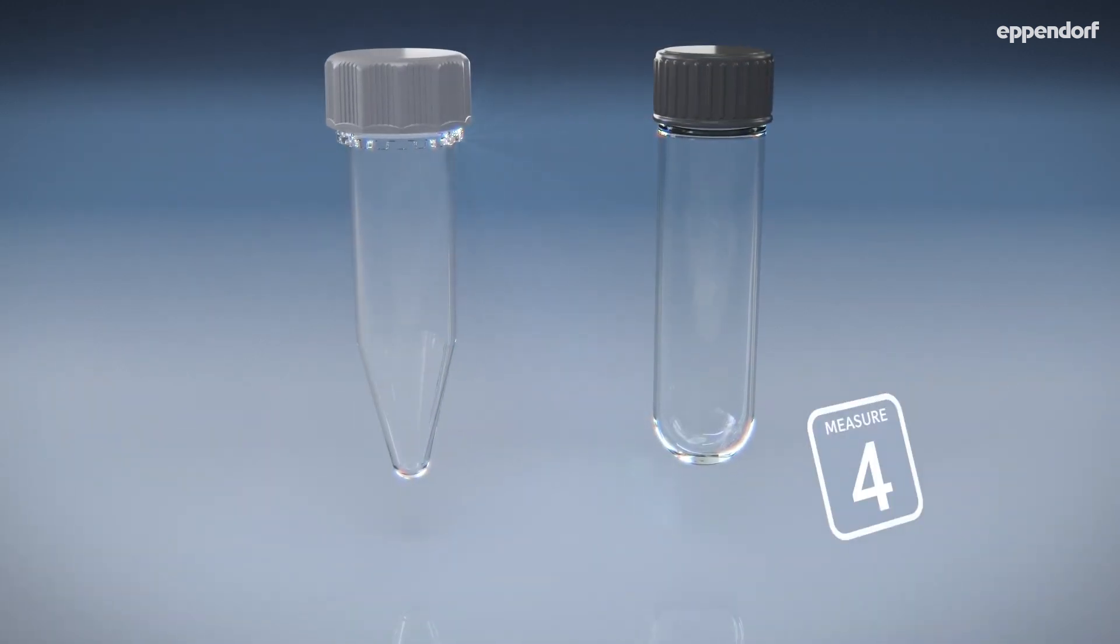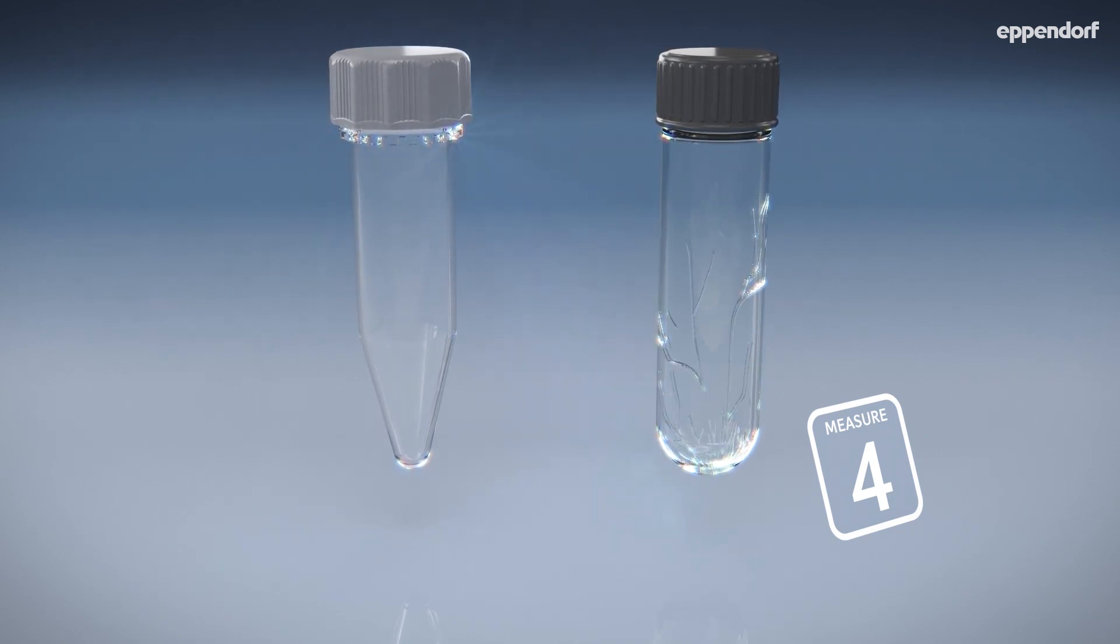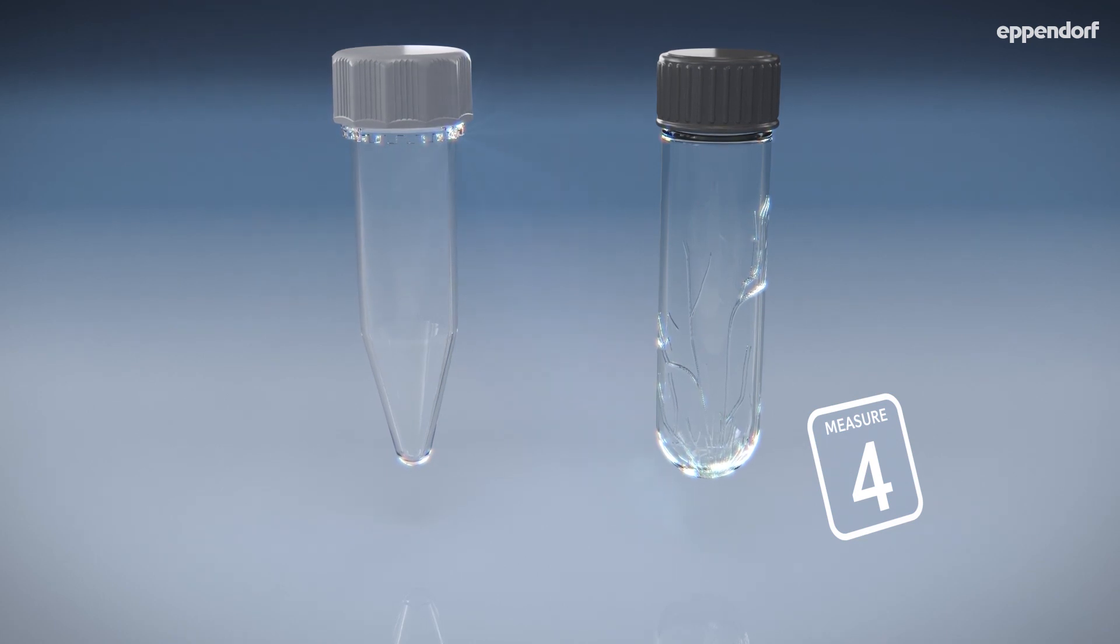Fourth, use plastic tubes instead of glass tubes. Plastic is less likely to break during centrifugation and can be closed more tightly than glass tubes.